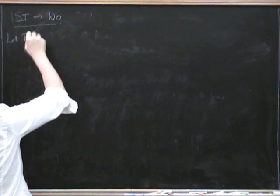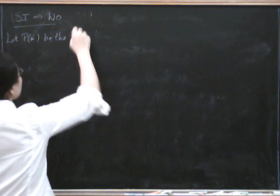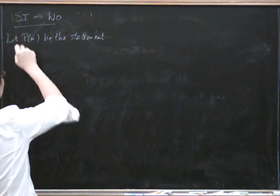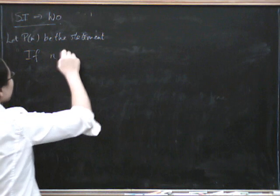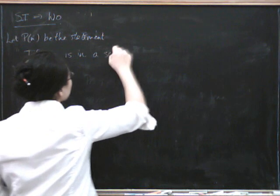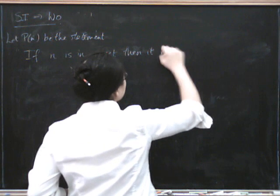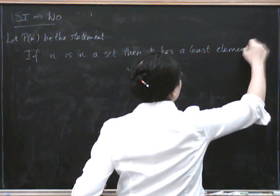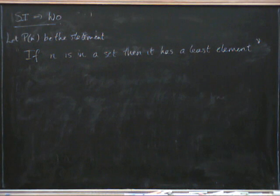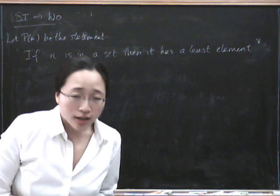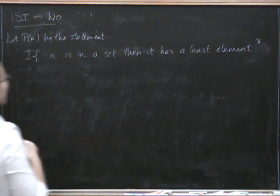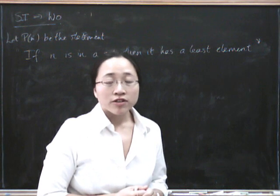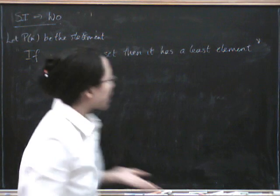So let P(N) be the statement: if N is in a set, then it has a least element. Now let's try and prove by strong induction that this is true for every N. Because if we prove that for every N, then we've got that every non-empty set has a least element.